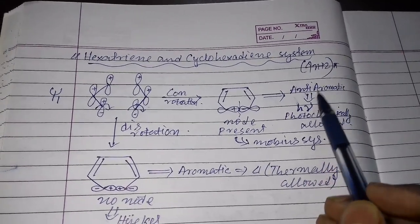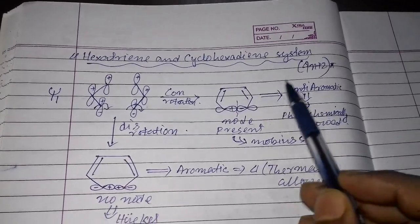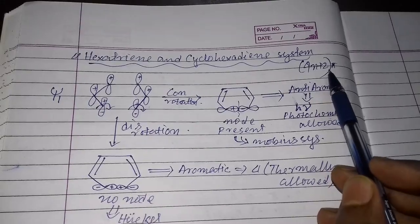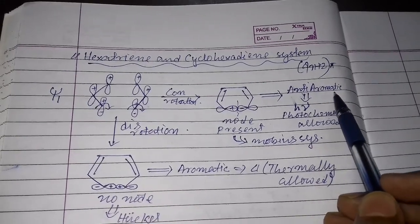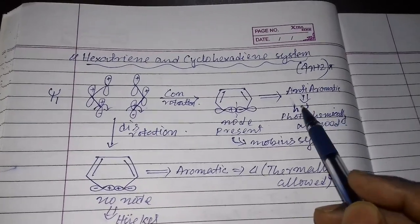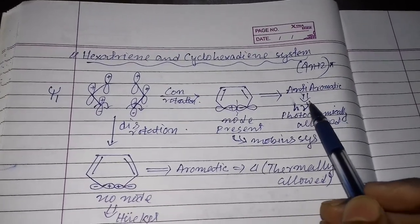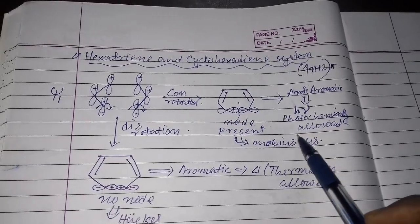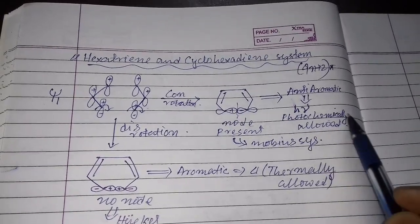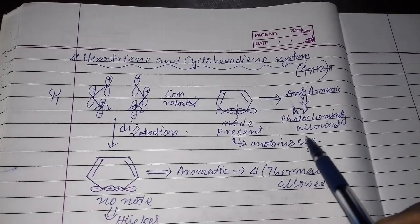According to Möbius theory, 4n+2 pi electronic systems are anti-aromatic and therefore photochemically allowed. So the conrotatory process for the hexatriene system is photochemically allowed.